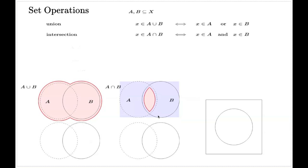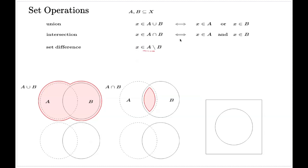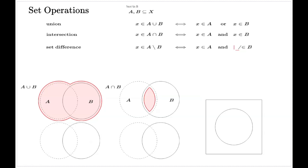Another operation we will use very often is the set difference. The typical notation for the set difference uses a stroke inclined to the left. An element x belongs to the difference of two sets, A minus B, if and only if x belongs to A and x does not belong to B at the same time.